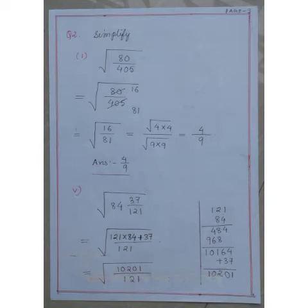Question number 5. Root of 84 and 37 by 121. This is a mixed fraction. To convert it to an improper fraction, we have to multiply 121 by 84 and then the result is added to 37. So, we get 10201.